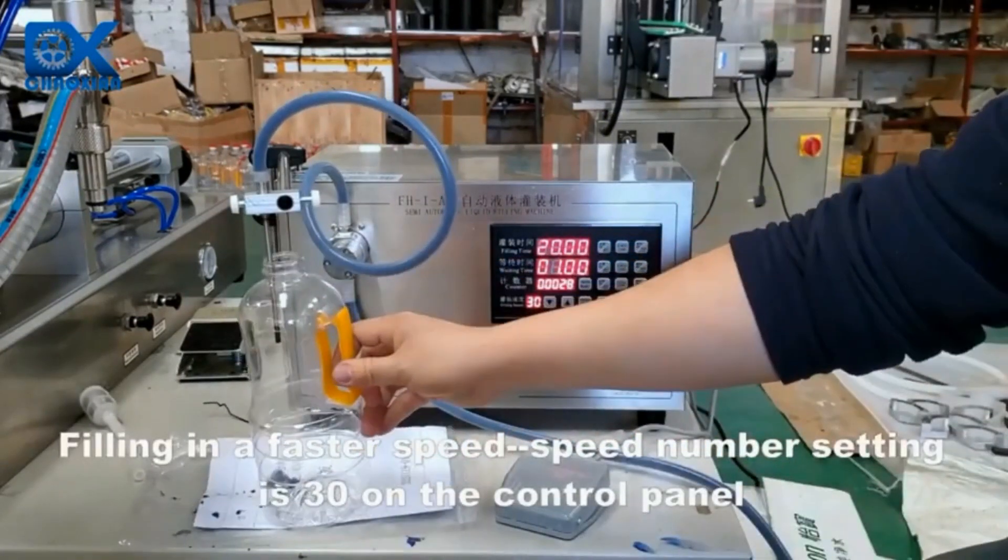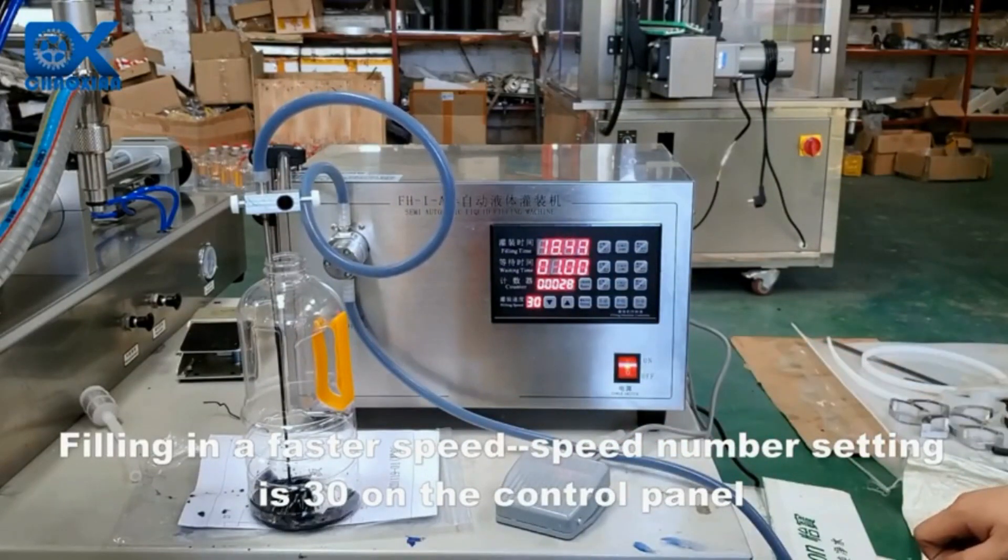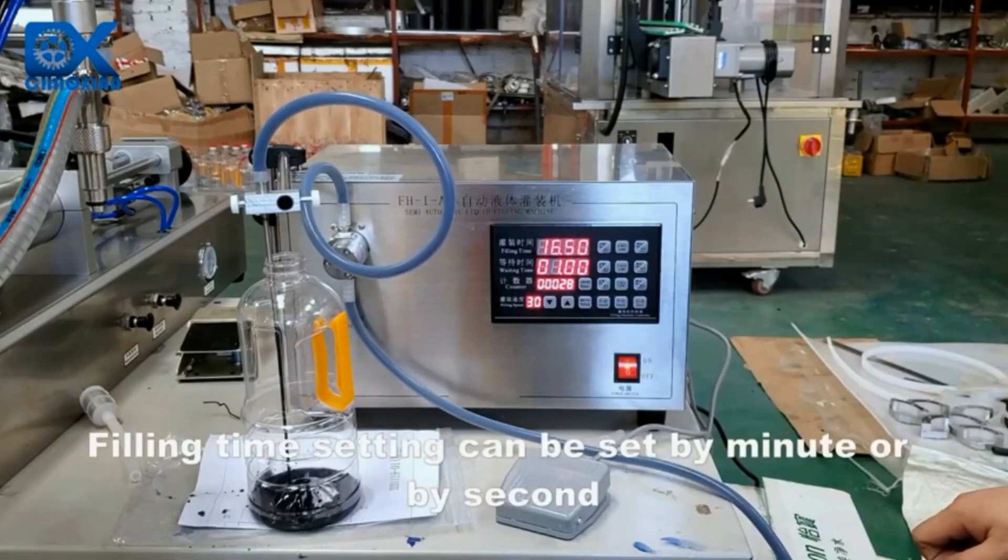Filling in a faster speed, speed number setting is 30 on the control panel. Filling time setting can be set by minute or by second.